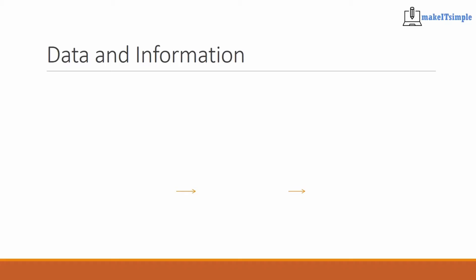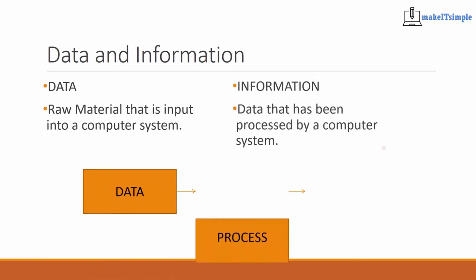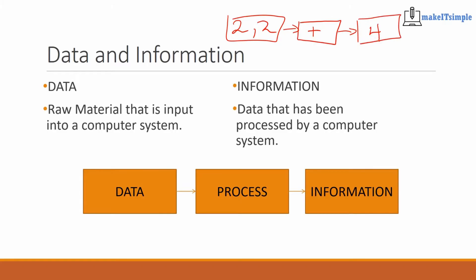We produce data all the time. Computers produce data, we produce data — we have names, we have numbers, we have all sorts of stuff. And when you take data and input it into a computer system, it comes back out as information. So data goes through some sort of process and comes out as information. An easy example would be the numbers two and two, and then the process that you have is addition — the information that you will get out of it would be four. Simple, right? Data, process, information — and that drives almost everything in data communication.